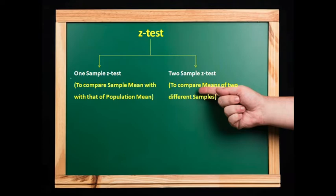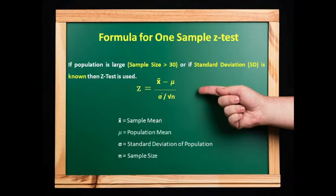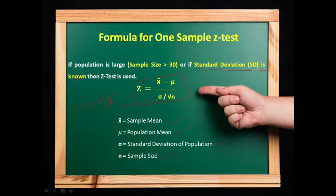Z test is of two types. First is the one-sample test, used to compare sample mean with that of population mean. In the two-sample test, it is used to compare means of two different samples. Formula for one-sample Z test: Z = (x̄ - μ) / (σ / √n), where x̄ is the sample mean, μ is the population mean, σ is the standard deviation of the population, and n is the sample size. The standard error of mean equals σ / √n.